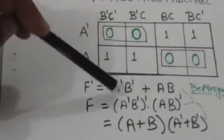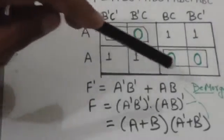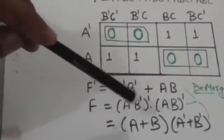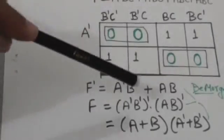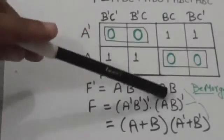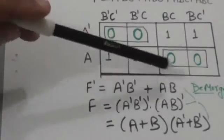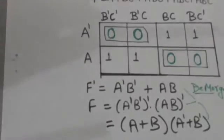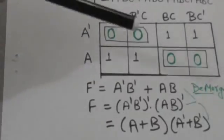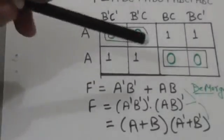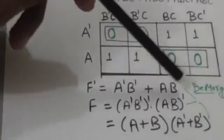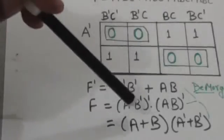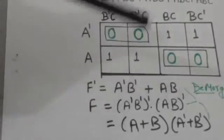The complement of f-complement equals f. Now the complement of this right-hand side would give us f. Here we have applied De Morgan's theorem — when we take the complement of this right-hand side, it becomes this expression.